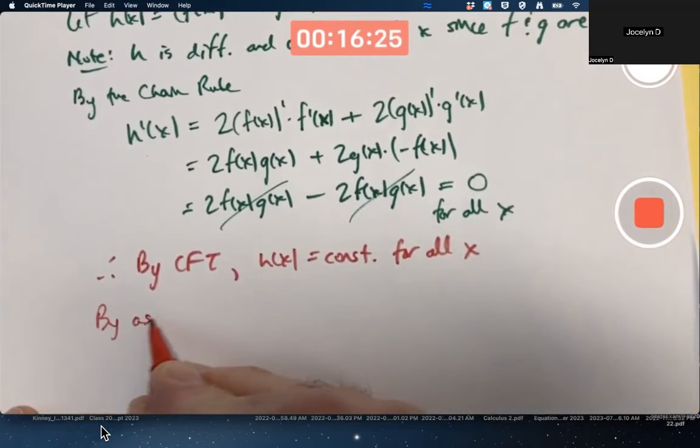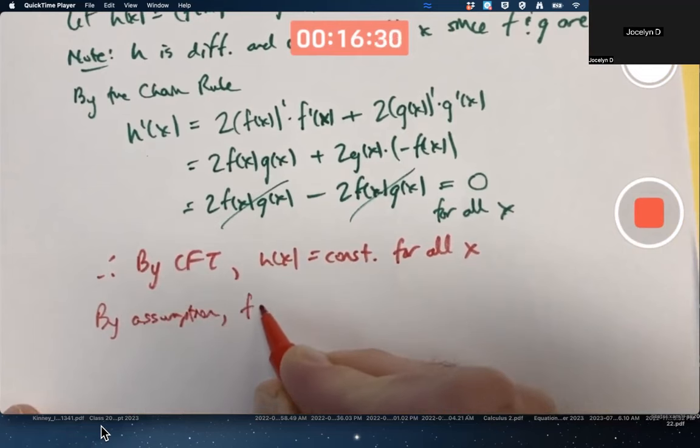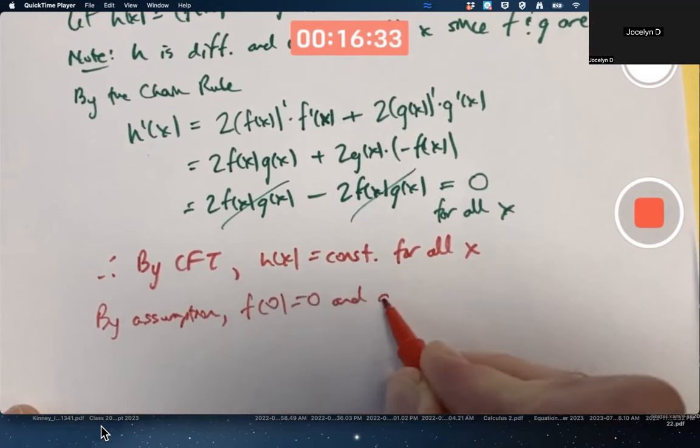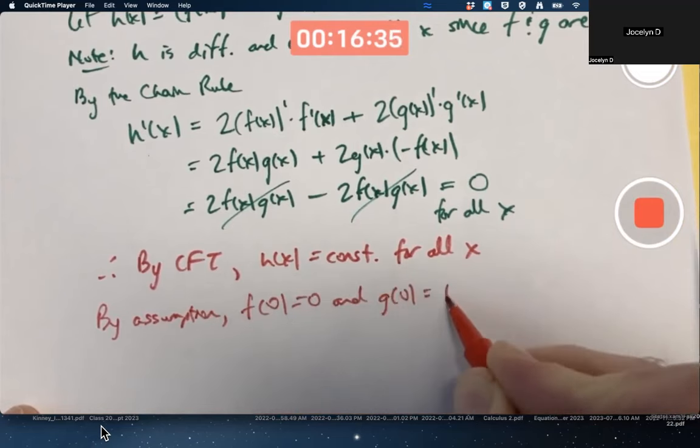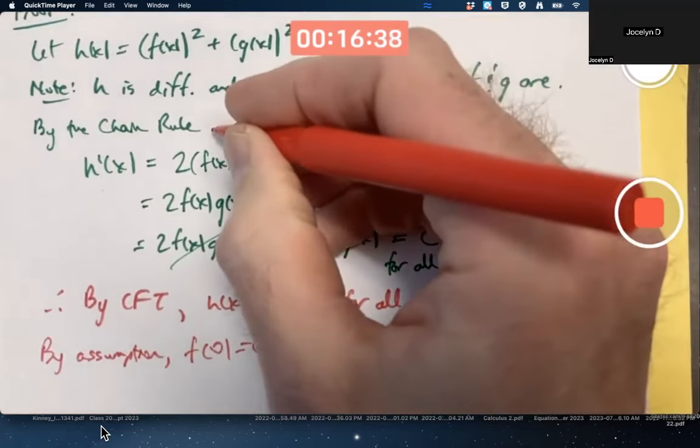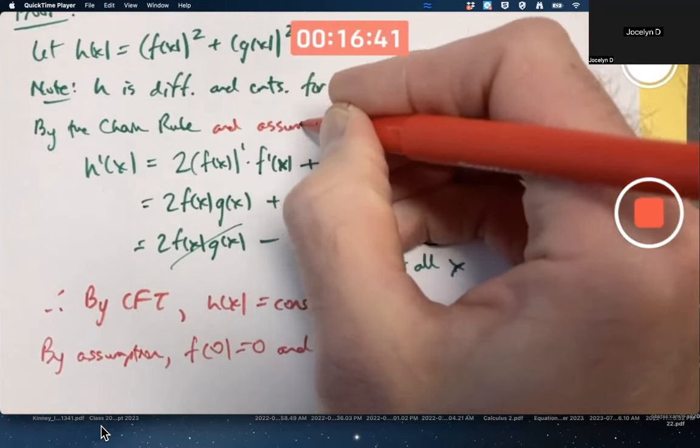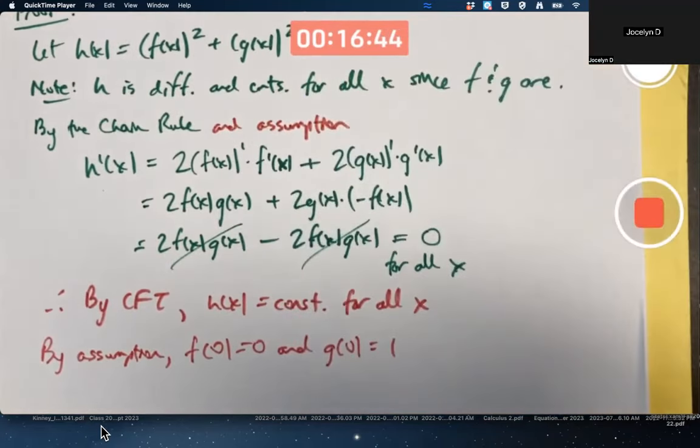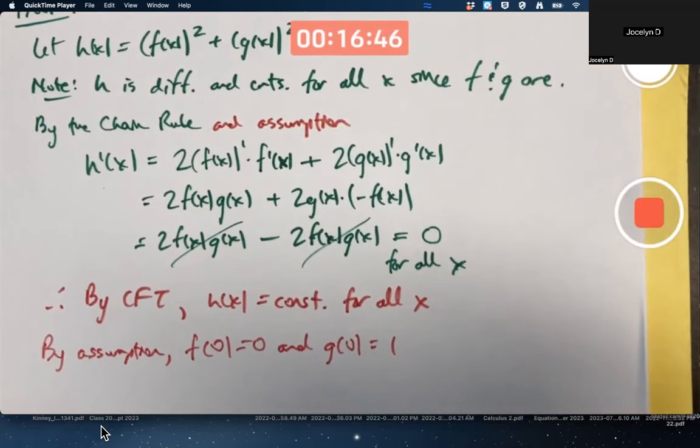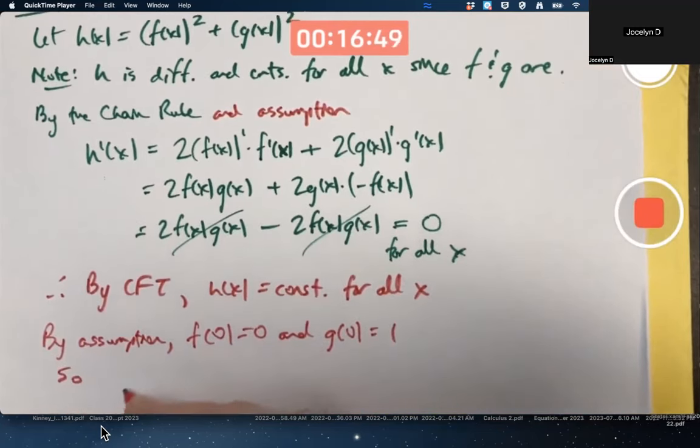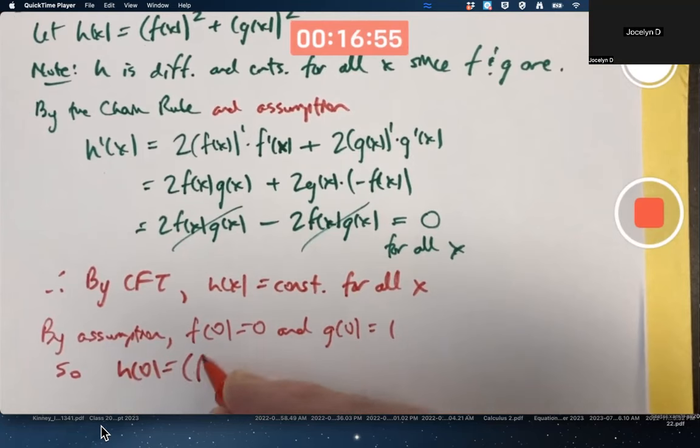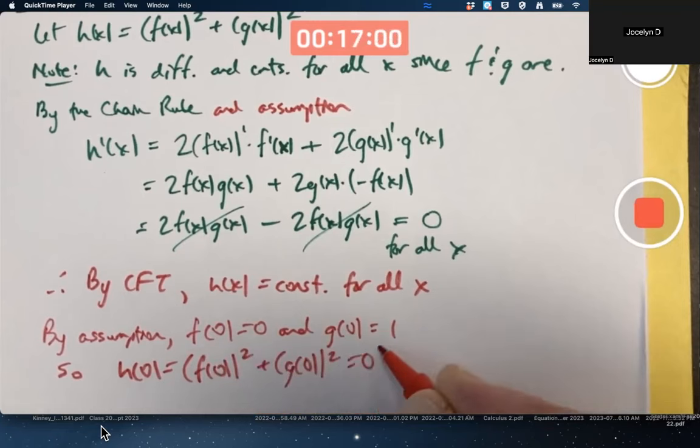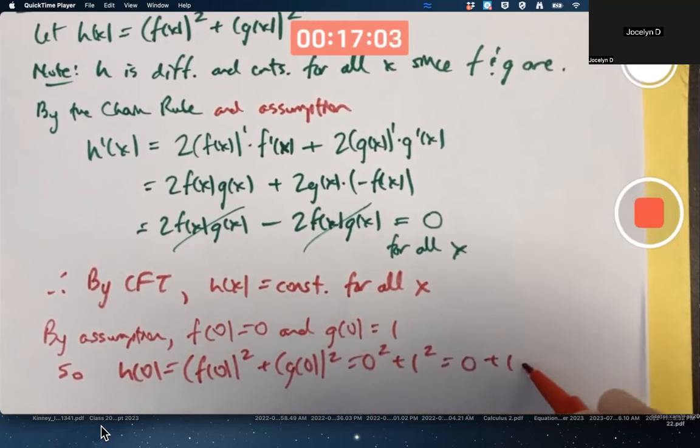By assumption, f of zero is zero and g of zero is one. I guess I should have said by assumption back up here as well. What does that mean? That means h of zero is f of zero squared plus g of zero squared. Zero squared plus one squared is zero plus one is one.